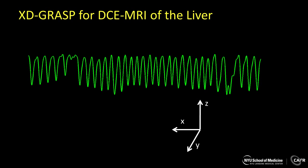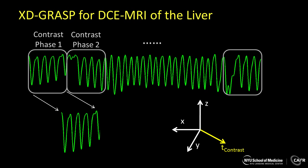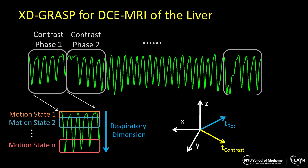Given the respiratory motion signal, we can first sort the acquired data into multiple contrast phases. And for each contrast phase, we can further sort the data into multiple respiratory motion states, so that we can have a five-dimensional image set. The compressed sensing reconstruction can be performed to exploit correlation along these two dynamic dimensions.